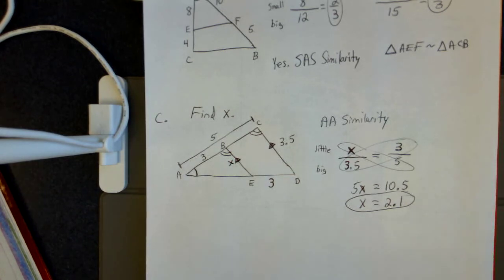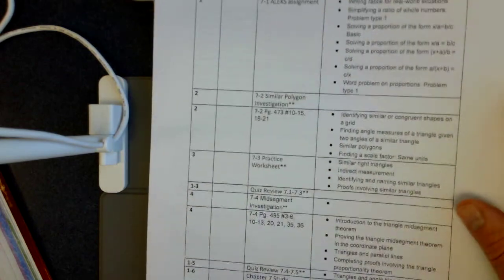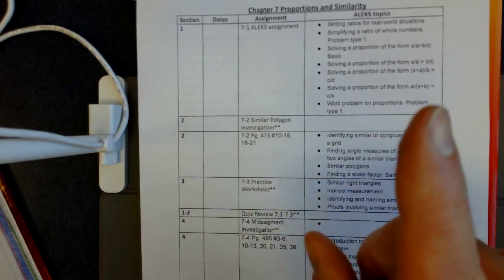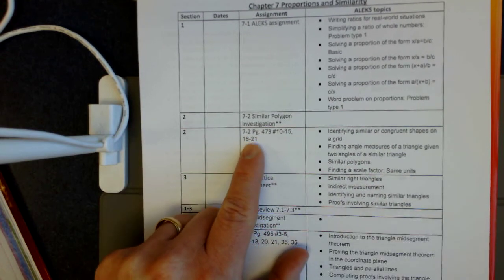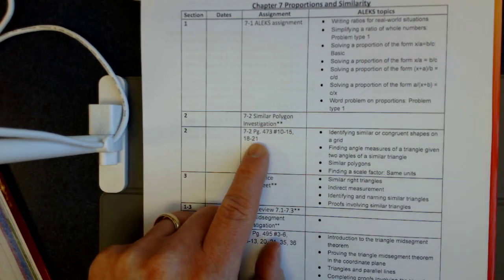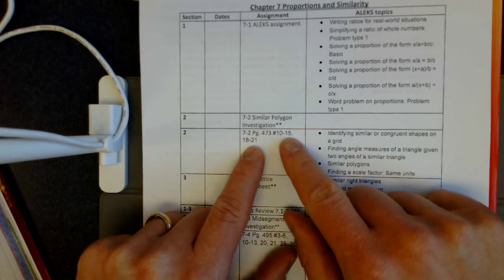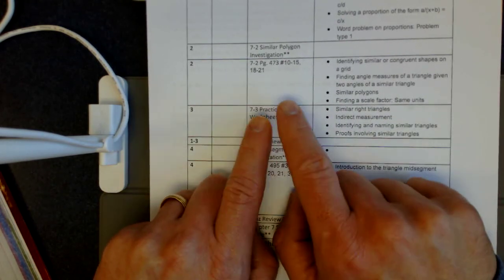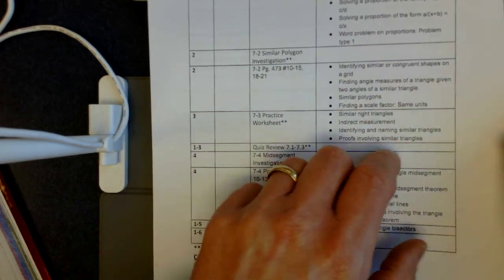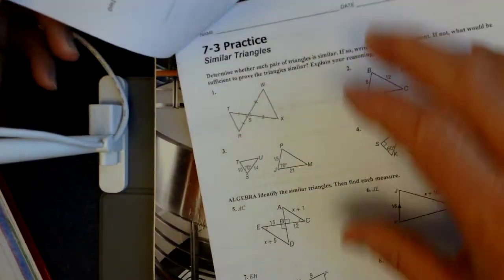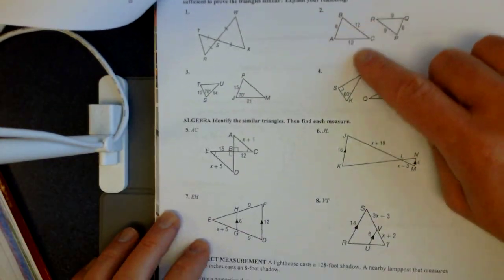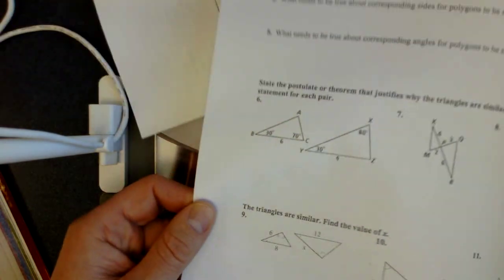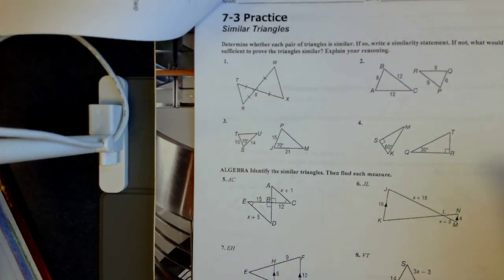That gets us through section 7-3. For the rest of the time today, we have your Chapter 7 packet, and a book assignment from page 473 — the answers for those are on Google Classroom so you can check as you go. When you finish that, there's the 7-3 Practice Worksheet, also with answers in Google Classroom. The worksheet is just one side; the back is the study guide we'll do later.